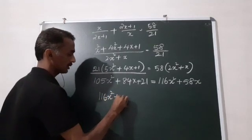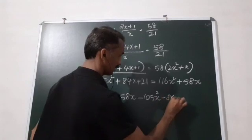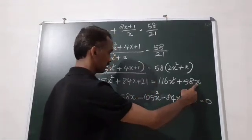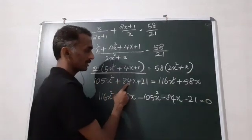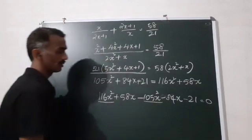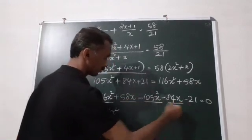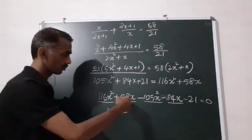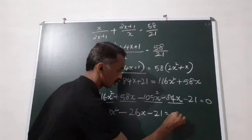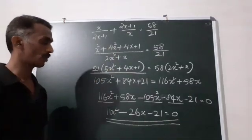Expanding and simplifying: 16x squared plus 58x minus 105x squared minus 84x minus 21 equals 0. Then combining like terms: 116x squared minus 105x squared gives 11x squared. And 58x minus 84x gives minus 26x. So we get 11x squared minus 26x minus 21 equals 0.